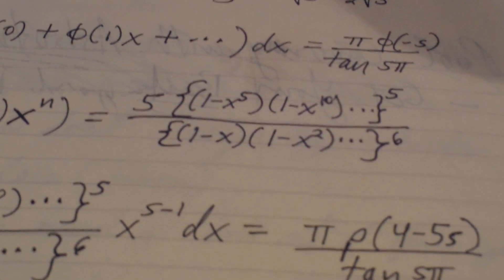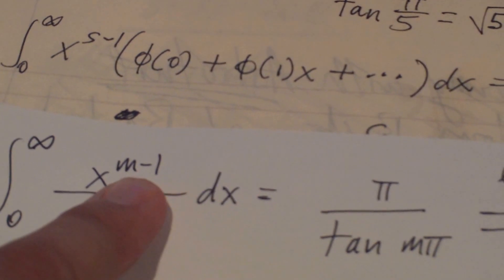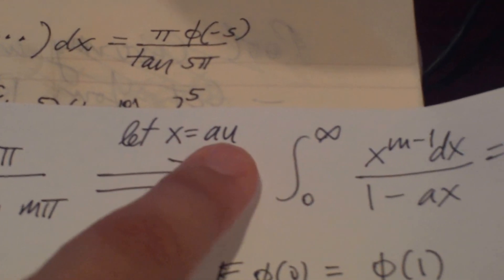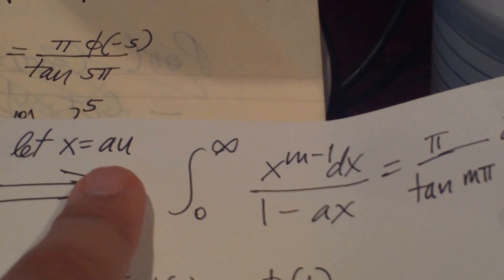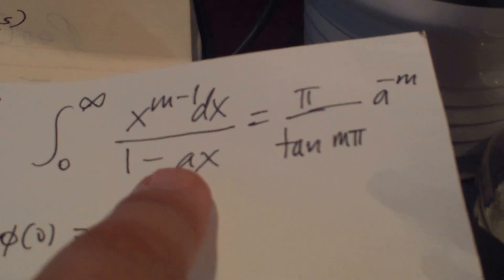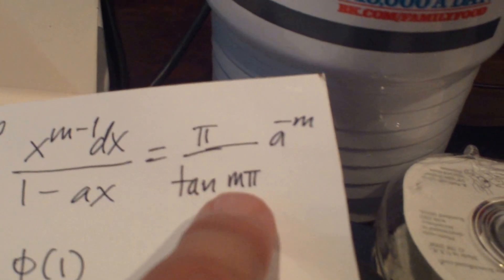So let me show you a derivation of Ramanujan's Master Theorem with all positive signs. You just take this integral, which is fairly well known — there are some restrictions on m, m can't be larger than one. That's equal to pi over the tangent of m pi. Then we let x equal a times u and do a regular u substitution, and we get one minus ax — and that a is important because we're going to be doing stuff with it in a minute. The result is pi over tangent(m pi) times a to the negative m.